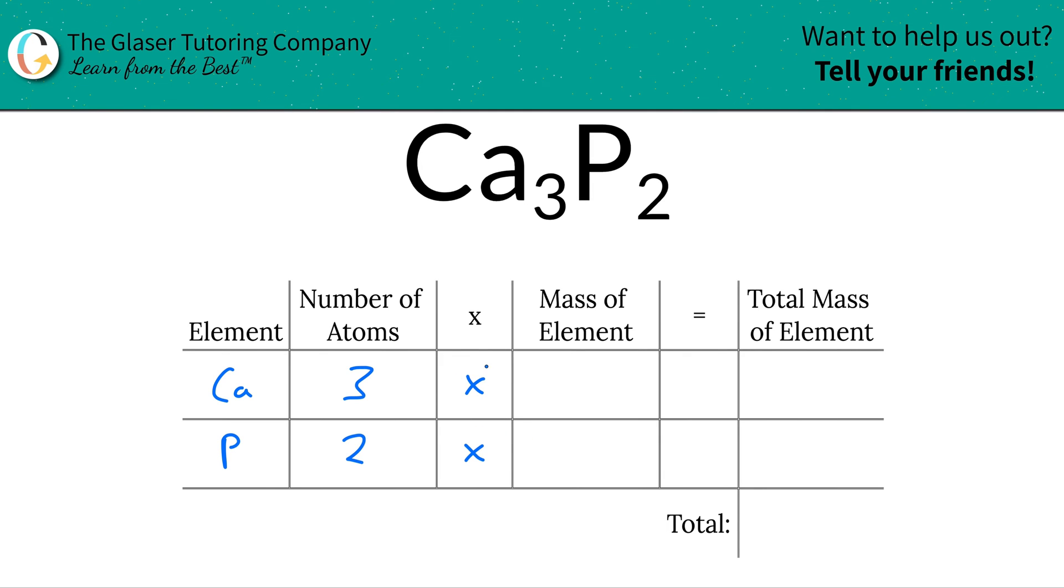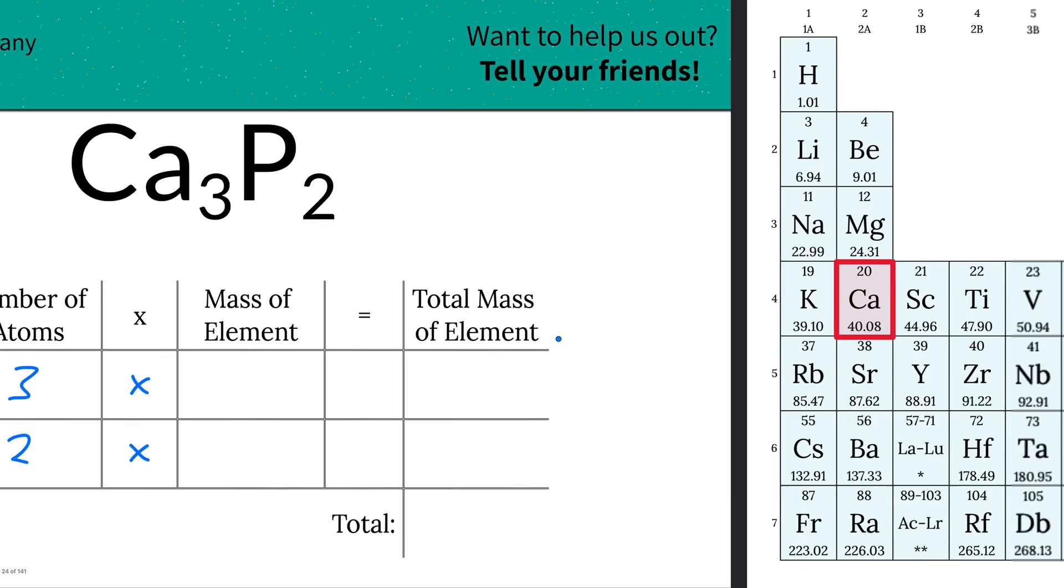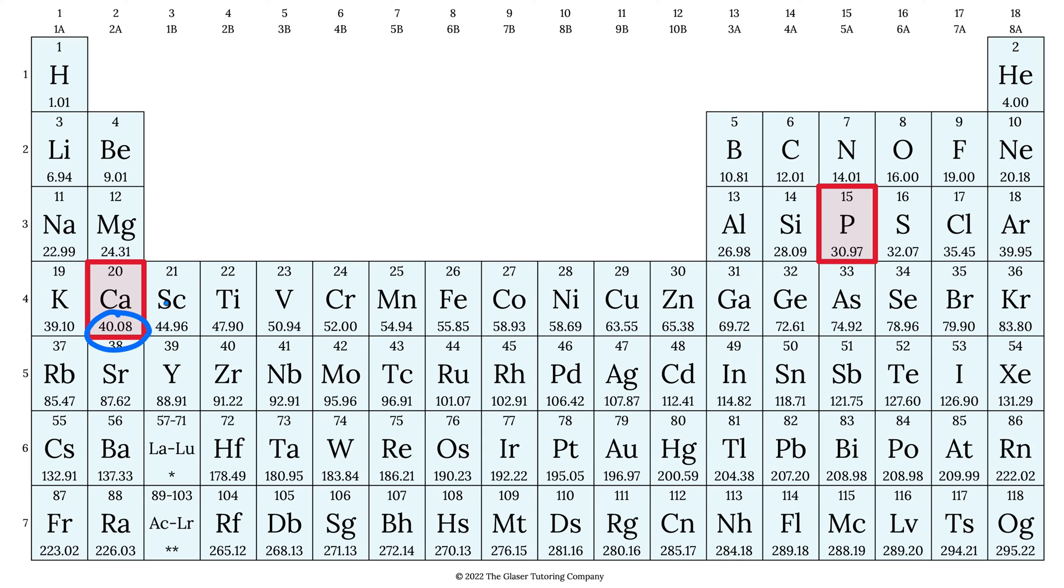So what we're going to do is take those numbers that we just found and multiply it by the mass of each particular element. That's found in the periodic table. So let's take a look. The mass of calcium here is about 40.08, and the mass of phosphorus is about 30.97. The magnitudes of those numbers are identical no matter if you're calculating molar mass or molecular mass. If it's molar mass, the units are just in terms of grams per mole, and molecular mass will be in terms of AMU.